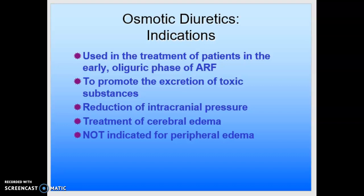Glucose, like mannitol, can behave as an osmotic diuretic. The glucosuria causes a loss of hypotonic water and sodium, leading to a hypertonic state with signs of volume depletion. So you can get hypotension and tachycardia as a result of that.